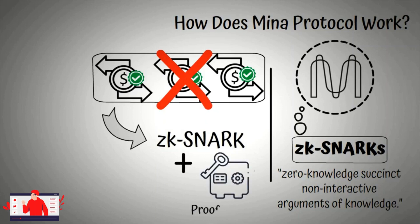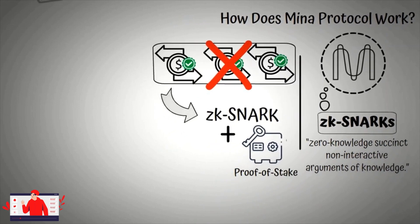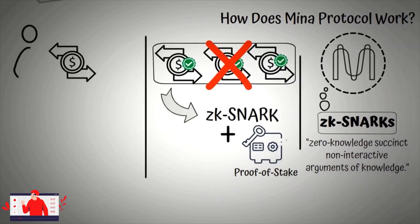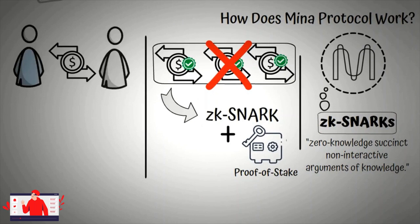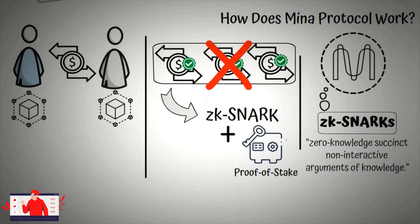Combined with a proof-of-stake consensus mechanism, MENA claims their implementation of ZK-SNARKs significantly cuts down on the resources needed to process and record transactions. In order to send and receive transactions on the MENA network, each participant is required to run a node. Additionally, MENA protocol requires two specialized nodes within the network to run effectively. First are the block producers, who select which transactions to include in the next block and win that block's reward.